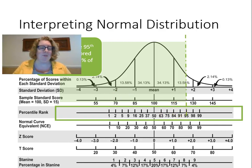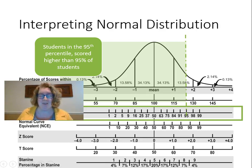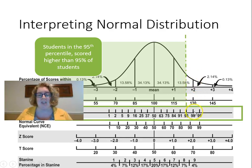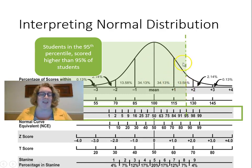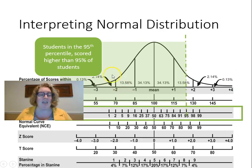If a student scored in the 95th percentile, they scored higher than 95% of students — but they're still within two standard deviations of the mean. To qualify for a gifted program in Florida, a student would have to score more than two standard deviations above the mean. Anything within one standard deviation I'd call average; between one and two standard deviations is above average but not meaningful for diagnosis. More than two standard deviations above or below the mean is where we really start talking about needing special individualized services — gifted programming on the upper end, or special education support on the lower end.